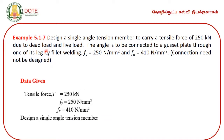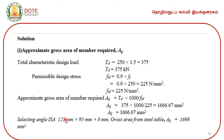We will now take Example 5.1.7, a real design problem. Design means we have to select a suitable section to carry a tensile force of 250 kilo Newton. The mechanical properties of the material are given. The first step is to assume the permissible design stress for the member, assumed as 0.9 × Fy, giving a permissible design stress of 225 Newton per millimeter square. The characteristic load of 250 kilo Newton is multiplied by the partial safety factor for load 1.5, giving a total design load of 375 kilo Newton.